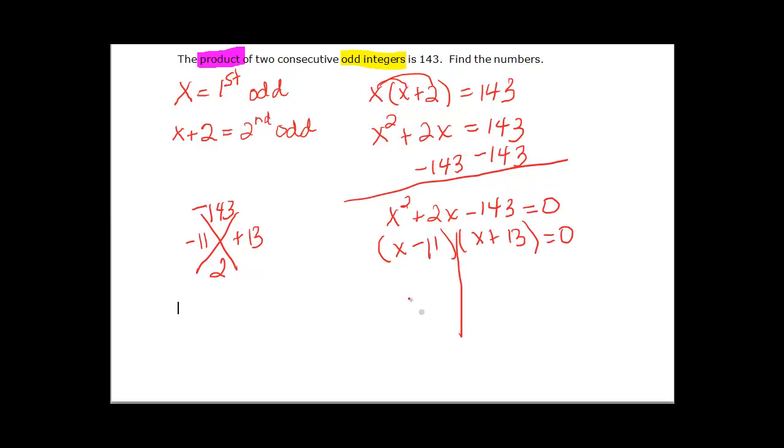So when we set those equal to 0 we get X minus 11 equals 0 so X is equal to positive 11. X plus 13 is equal to negative 13 when I subtract 13 from both sides.